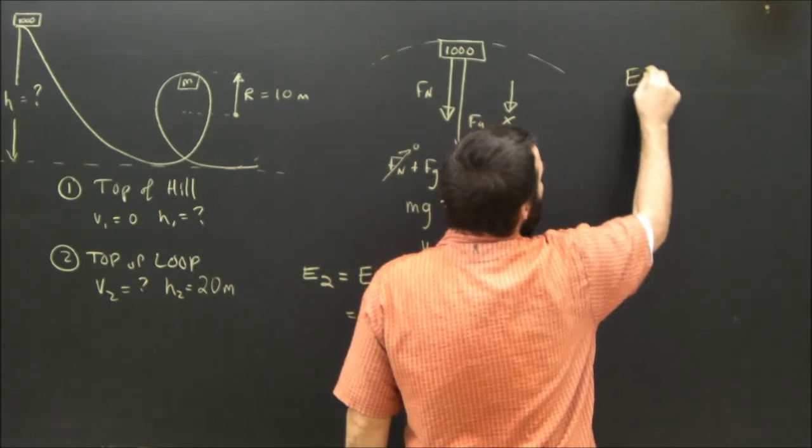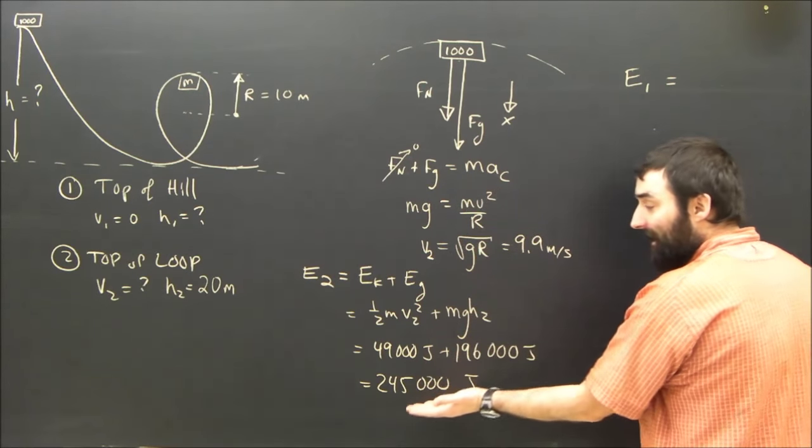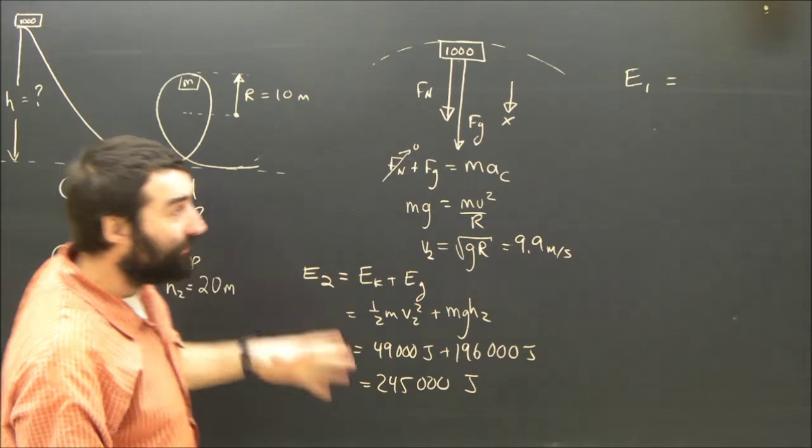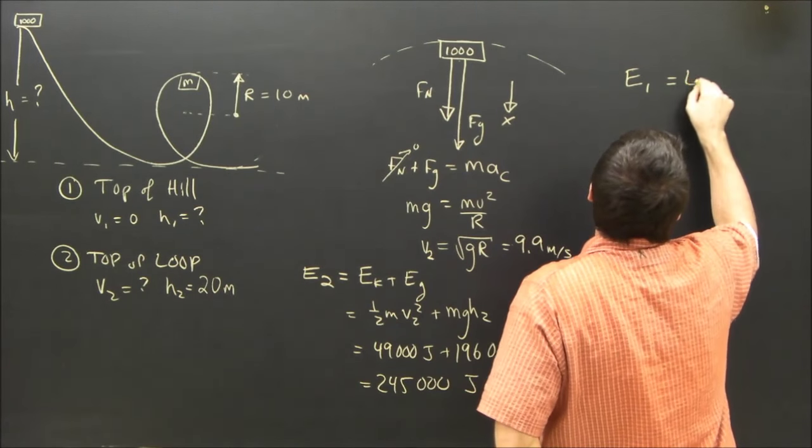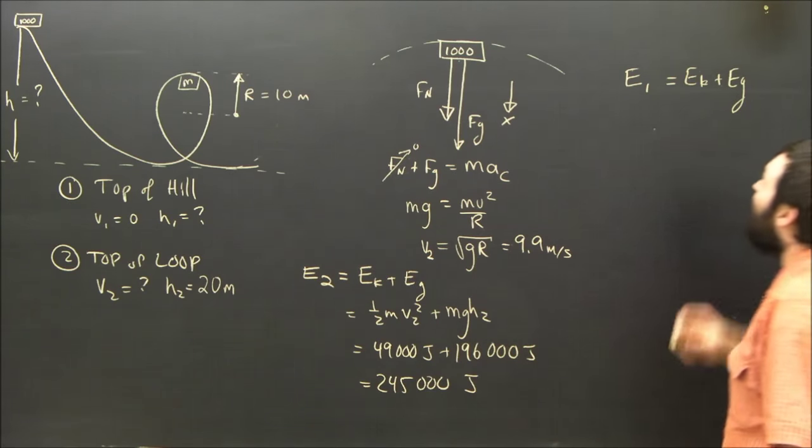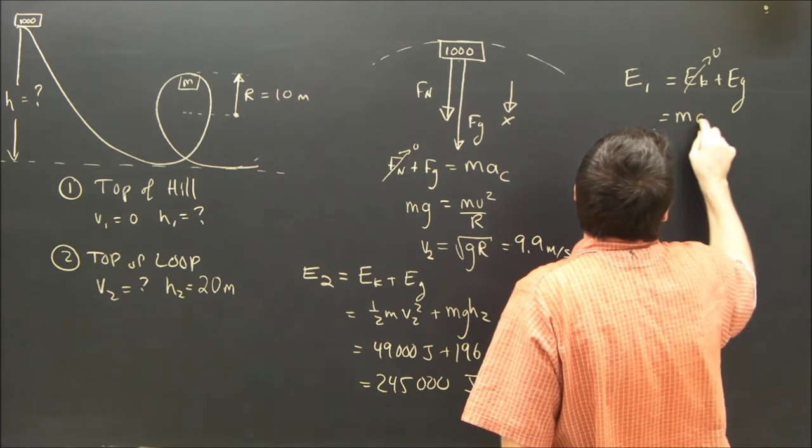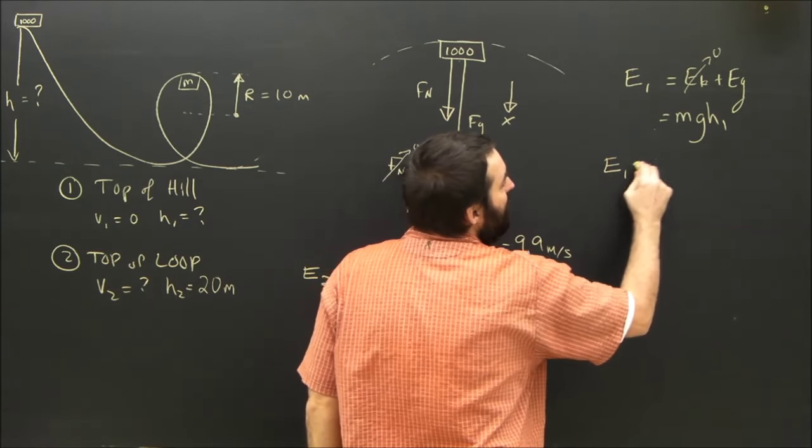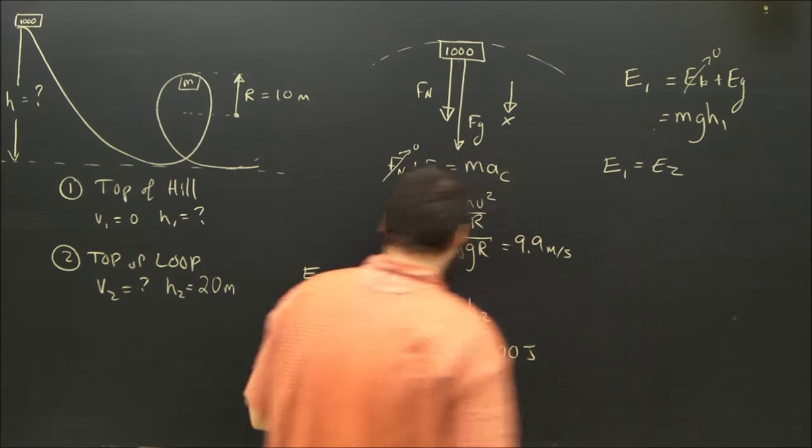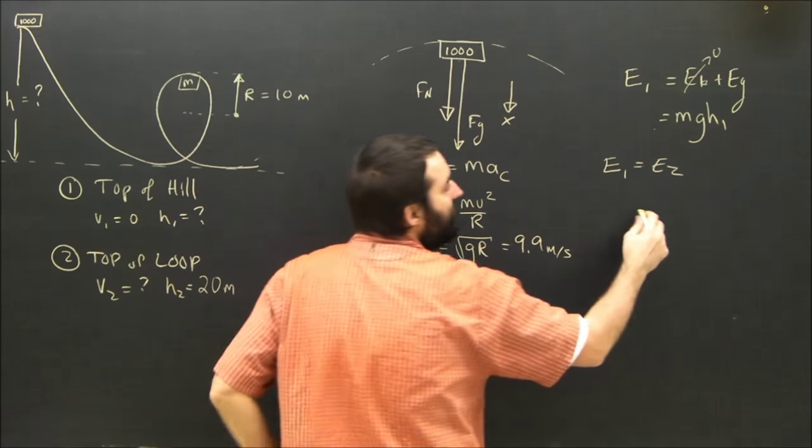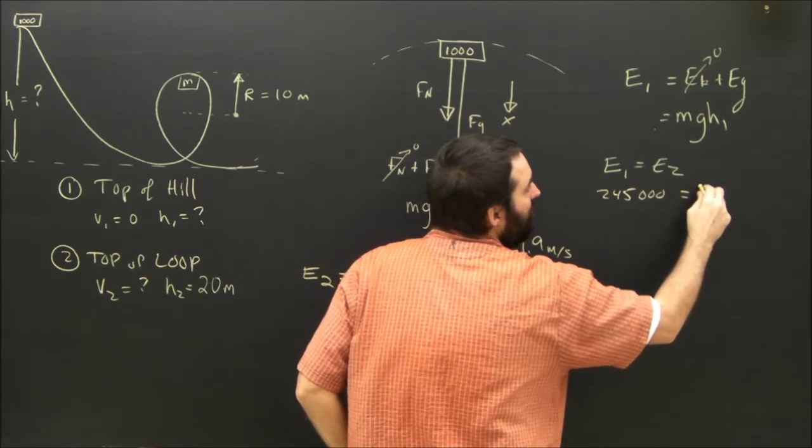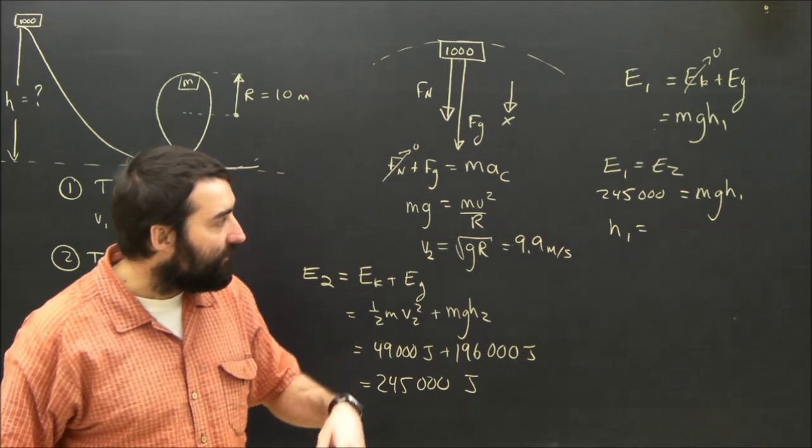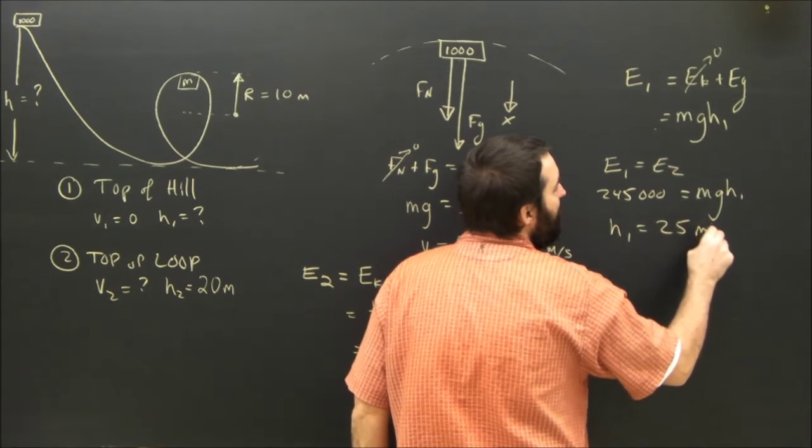And we know that the total mechanical energy can't change, right? If it has to have 245,000 joules at the top of the loop, it has to have 245,000 joules at the top of the hill. But at the top of the hill, it has no speed. So energy 1, which is also Ek plus Ep, has no kinetic energy. So that's going to be mgh1—h1, the thing that we're looking for. Conservation of energy tells us that E1 must equal E2, so E1 must also be 245,000 joules. So 245,000 must equal the mass times g times h1. So h1 equals 245,000 divided by 1,000 divided by 9.8, which gives us 25 meters.